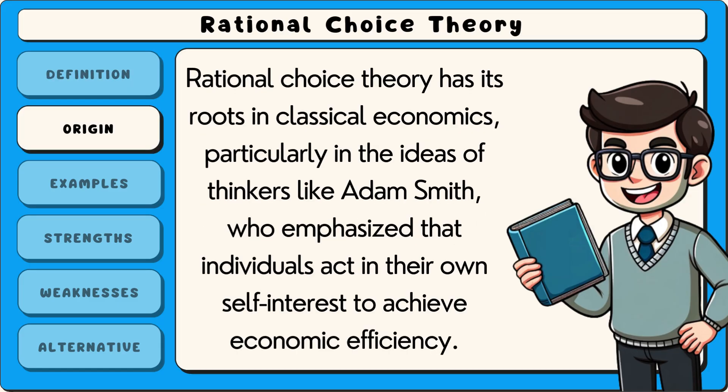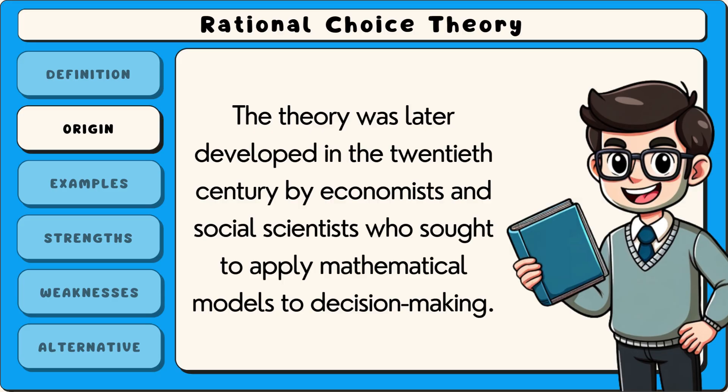Rational choice theory has its roots in classical economics, particularly in the ideas of thinkers like Adam Smith, who emphasised that individuals act in their own self-interest to achieve economic efficiency. The theory was later developed in the 20th century by economists and social scientists who sought to apply mathematical models to decision-making.